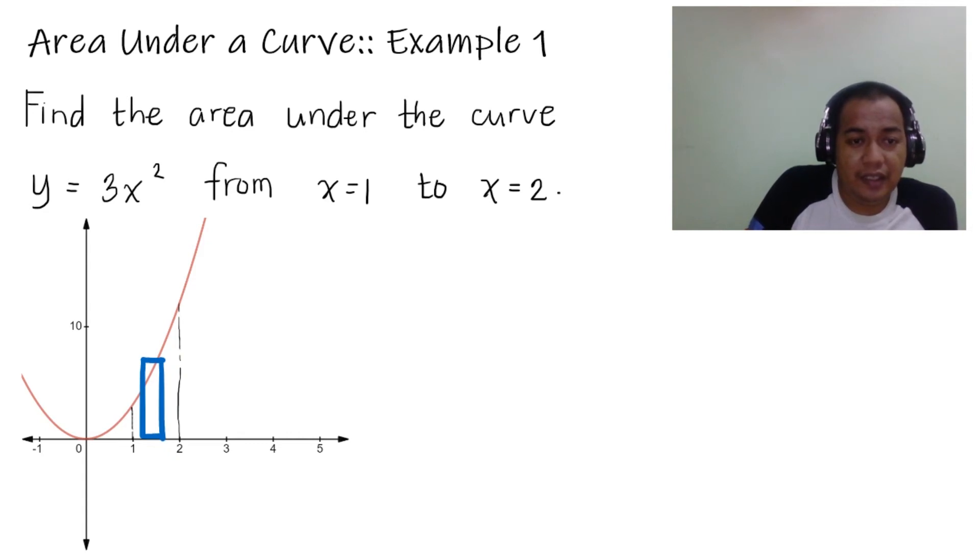So ang height ng rectangle ay y, and the width of the rectangle is dx. We got it sa along x. Therefore, the area of the shaded region, or the area of the region...